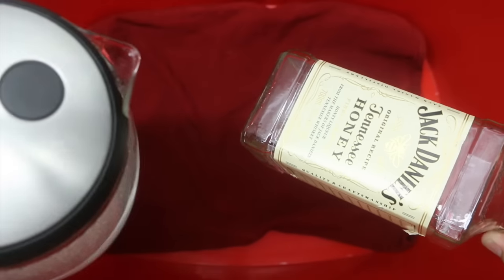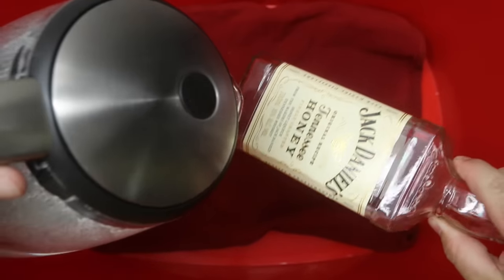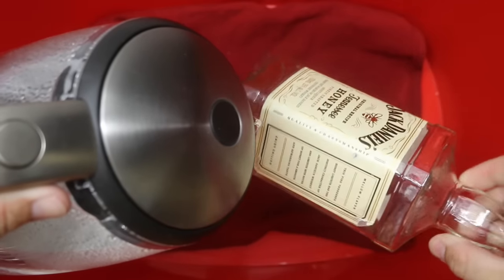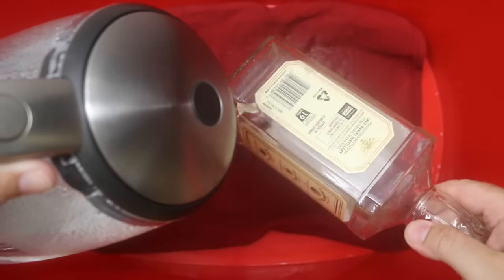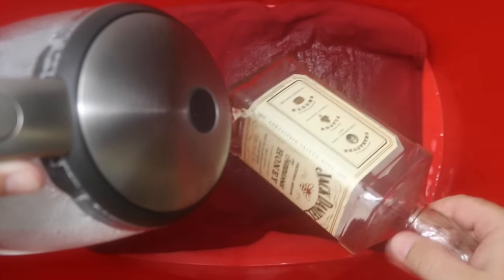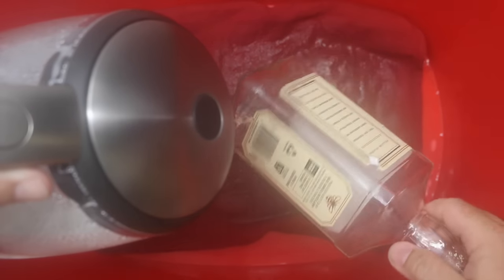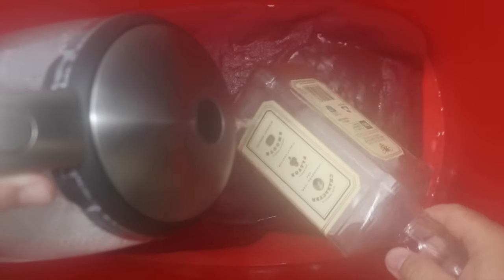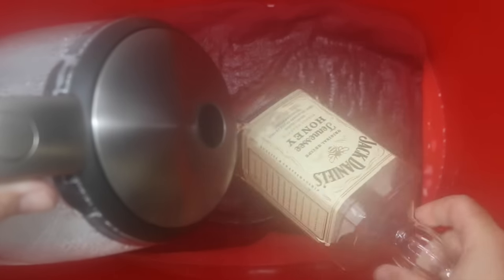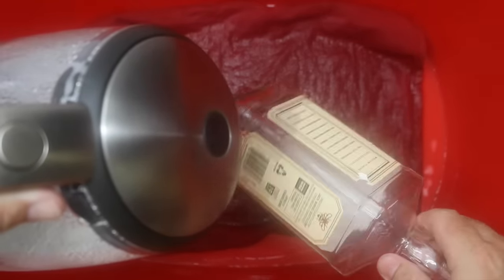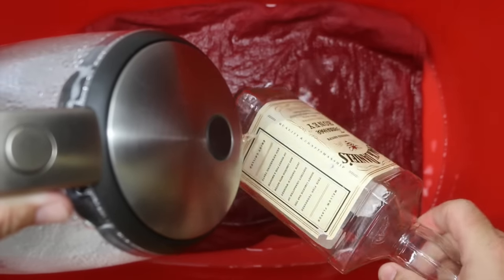So what you're going to want to do is just evenly pour it around that score line. So nice and easy, keep rotating the bottle all the way around. You're going to want to do this for about 20 seconds or so, just get nice even heat around there.